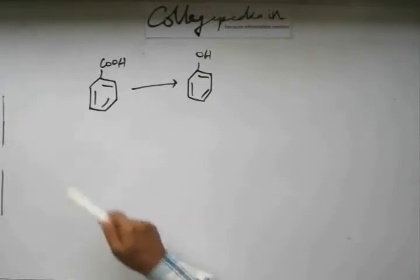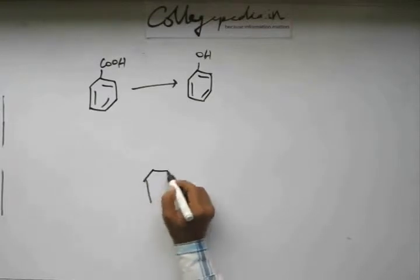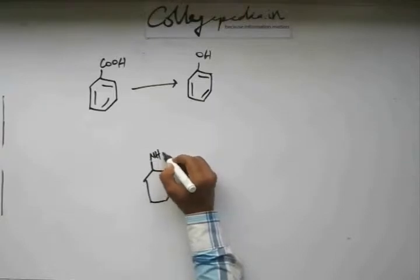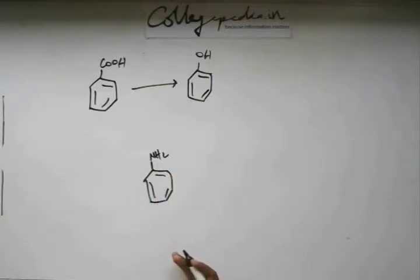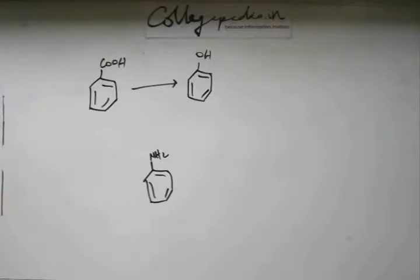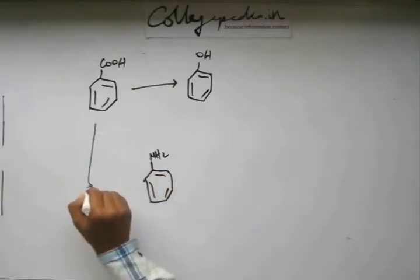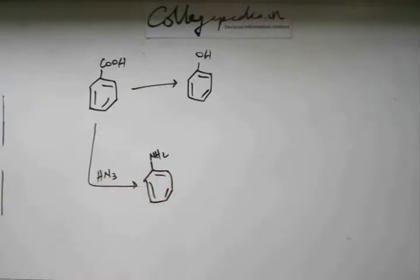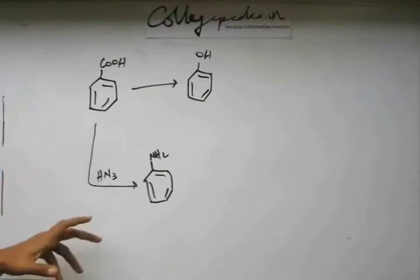So from benzoic acid you have to prepare a diazonium salt somehow. Diazonium salt is prepared from amine, from aniline. Now you have to get aniline from benzoic acid first. In this chapter we studied a reaction that converts a carboxylic acid group into an amine group directly in one step using a single reagent — hydrozoic acid — and the name of the reaction is the Schmidt reaction. Schmidt reaction will give you aniline from benzoic acid.